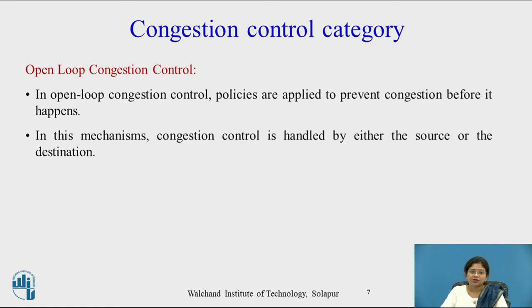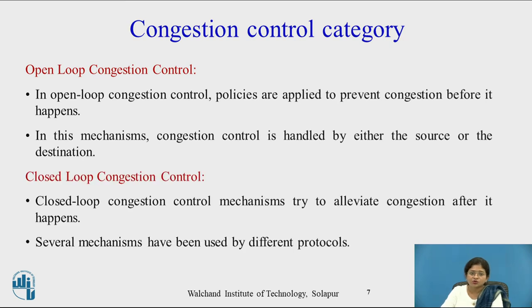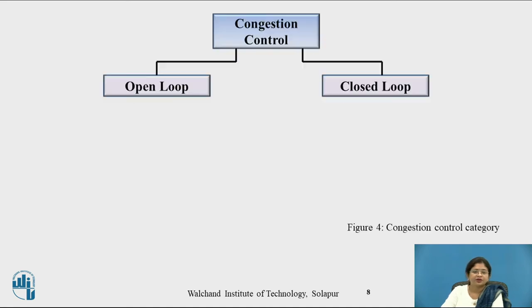In open loop congestion control, policies are applied to prevent congestion before it happens. In this mechanism, congestion control is handled by either the source or the destination. In closed loop congestion control, the mechanism tries to alleviate the congestion after it happens. Several mechanisms have been used by different protocols, which we will see in this session.